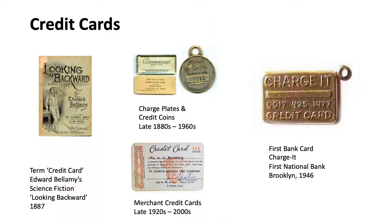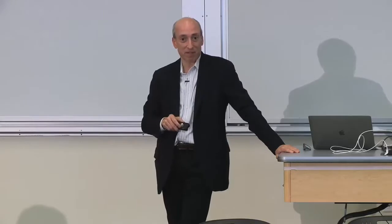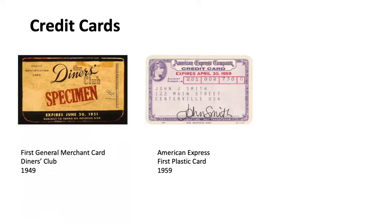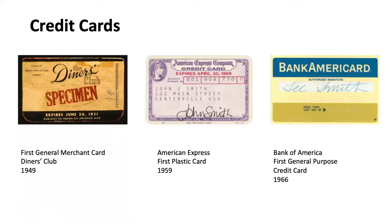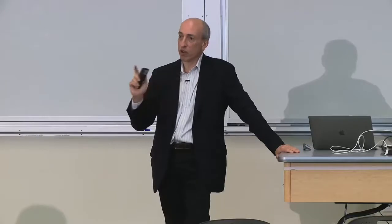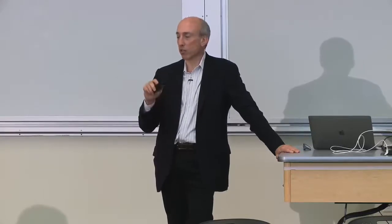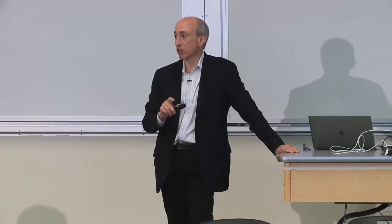In 1946, in a bank in Brooklyn, a man named Biggins started the first real 'charge it' — you could charge things at a few dozen places in Brooklyn. Then it took off. Diners Club started in the early 1950s, getting restaurants to extend credit. American Express in the mid-1950s. Then in the mid-1960s, Bank of America — then a California bank — created a cooperative with other US banks to extend credit, and the credit boom took off.